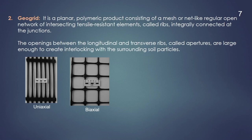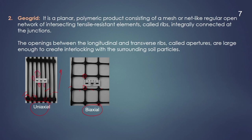Next is the geogrid. Geogrid is a planar polymeric product consisting of a mesh or net-like regular open network of intersecting tensile resistance elements known as ribs, which are connected integrally to each other. This geogrid can be uniaxial if it is stretched along its length, or biaxial if it is stretched in both the longitudinal and transverse directions. Between these ribs there are openings known as apertures, and these apertures hold soil particles between them, producing interlocking to the particles.